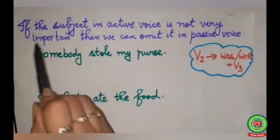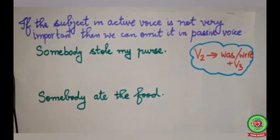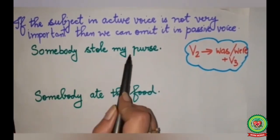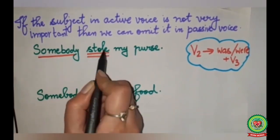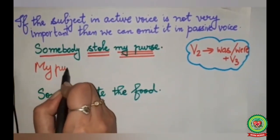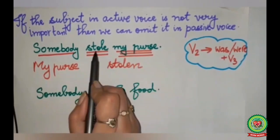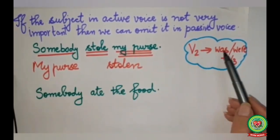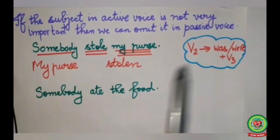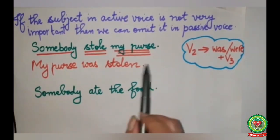Another rule: if the subject in the active voice is not very important, we can omit it in passive voice. First sentence: Somebody stole my purse. Somebody is the subject, stole is the verb, my purse is the object. My purse will come in the beginning. Stole changes to its past participle stolen. Stole is past form, so we add was. My purse was stolen. There is no requirement to write by somebody.